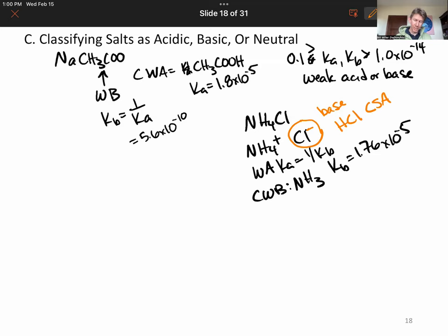Conjugate pairs: if you have a strong acid as your conjugate, then you are yourself what we would call inert or very weak as a base, meaning it has no influence over the pH.